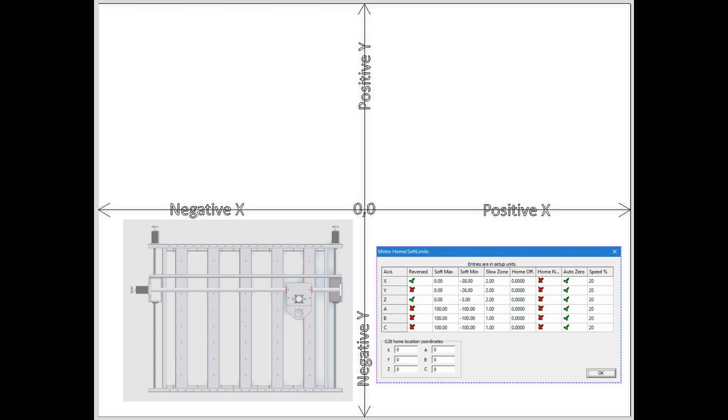Notice the column labeled home neg, which is shortened from home negative. This column is asking if you want your machine to home in the negative direction, with the check mark meaning yes and the x mark meaning no. Notice that I have an x mark in the x, y, and z because I want this machine to home in the positive direction, or to the back right.